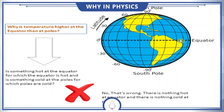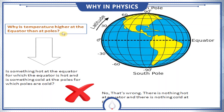We know that the shape of our earth is spherical. This is the equator of earth, and these are the two poles of earth — the north pole and south pole. Our question is: why is the temperature higher at the equator than at the poles?